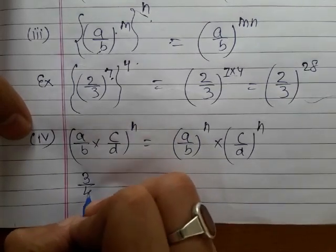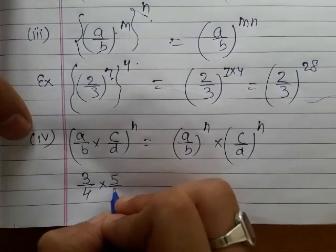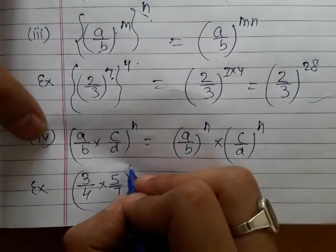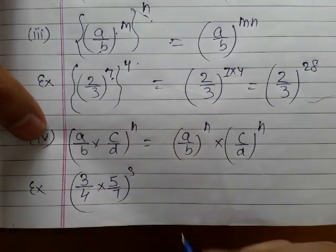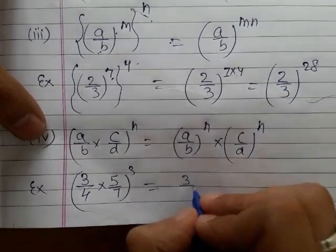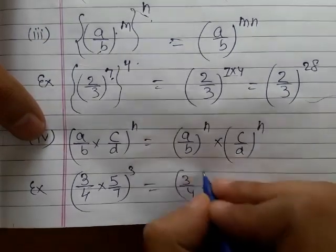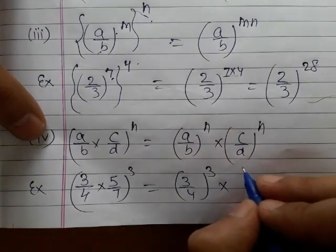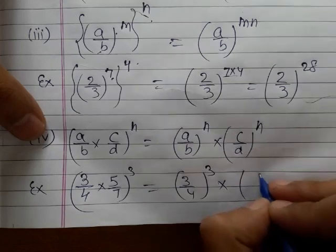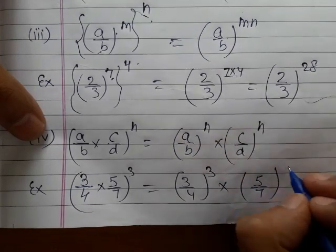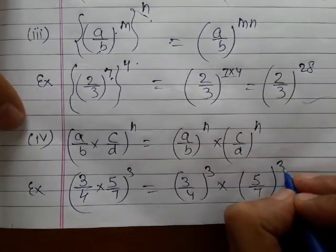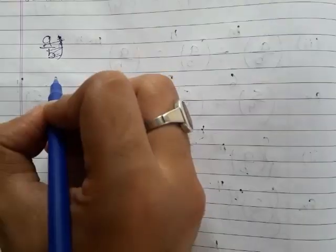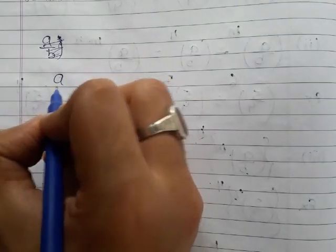For example, suppose we have two rational numbers 3 over 4 and 5 over 7, both raised to the power 3. We can write this as (3/4)^3 multiplied by (5/7)^3.